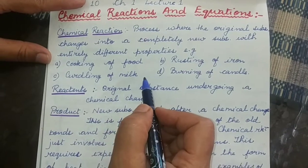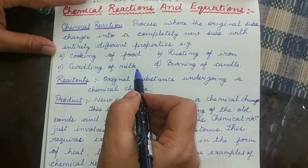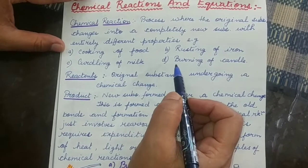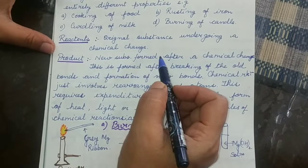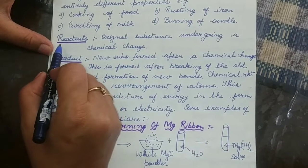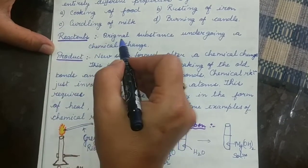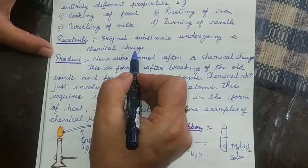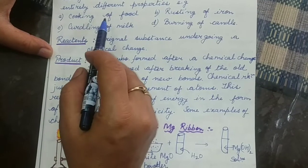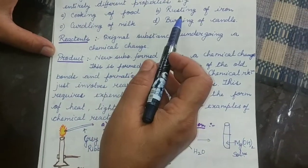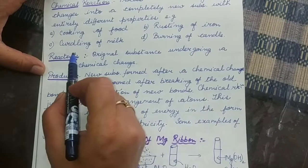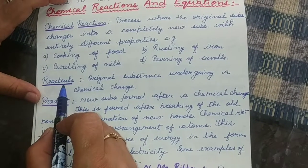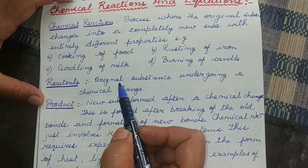The taste also changes. So a completely new substance with different properties is formed after a chemical reaction. Now let us study some terms related to chemical reactions, like reactants. A reactant is the original substance which undergoes a chemical change. For example, in case of rusting of iron, iron is the reactant. In case of curdling of milk, milk is the reactant. So the reactant is the substance that we start with in the reaction.